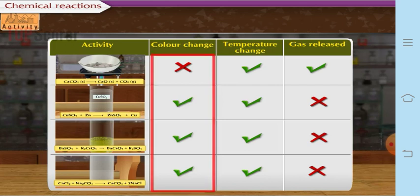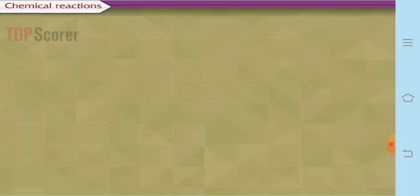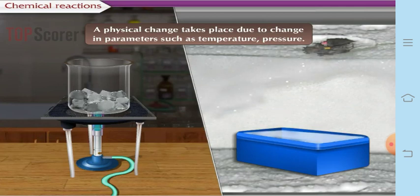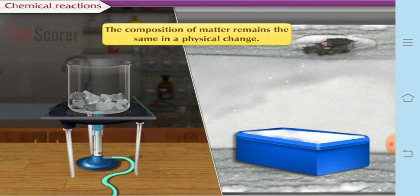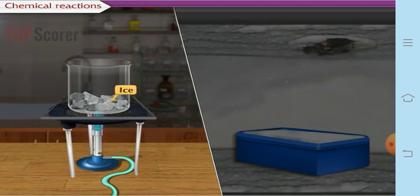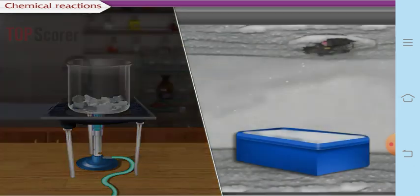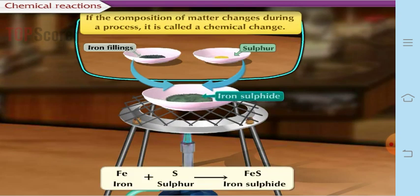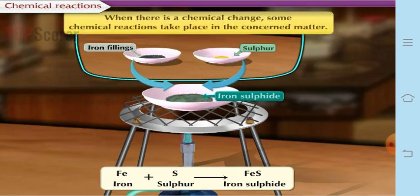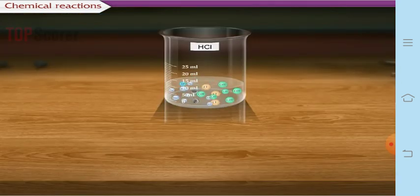From the summary table we can see that in a chemical reaction there will be color change, temperature change, and sometimes gas released. Physical changes occur due to changes in parameters such as temperature or pressure, and the composition of matter remains the same, making them reversible. For example, water changing to ice and back to water is only a change of state — if the composition of matter changes it is a chemical change; if not, it is a physical change.